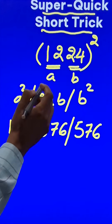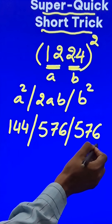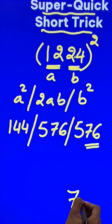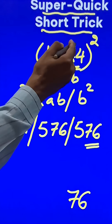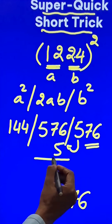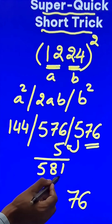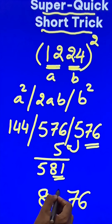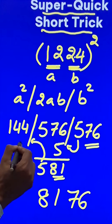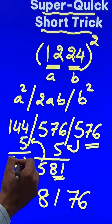Now what do you do with these numbers? Since we made doublets, we will make doublets here also. So the last two digits, 76, will be a part of your answer — 76 are the last two digits of the square of 1224. The 5 gets carried forward, and this becomes 581. Out of 581, the last two digits 81 will be retained as the next two digits, and the 5 will be carried forward. So 144 and 5 gives 149 as the remaining part.